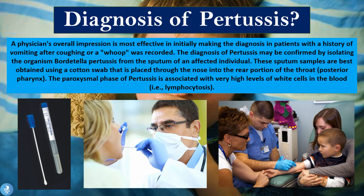Now let's talk about the diagnosis of pertussis. A physician's overall impression is most effective in initially making the diagnosis, especially in patients with a history of vomiting after coughing or in whom a whoop is recorded. The diagnosis may be confirmed by isolating the specific bacterial organism Bordetella pertussis from sputum samples of an infected individual. These sputum samples are best obtained using a cotton swab placed through the nose into the rear portion of the throat, the posterior pharynx. During the paroxysmal phase, pertussis is associated with very high levels of white cells in the blood, especially lymphocytes — giving us a lymphocytosis.